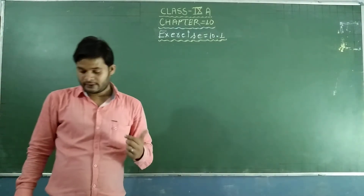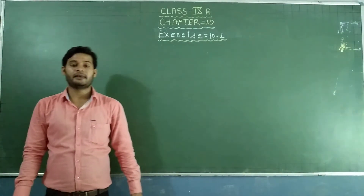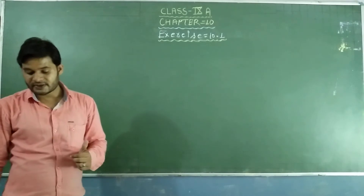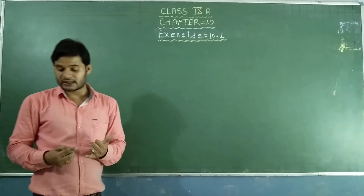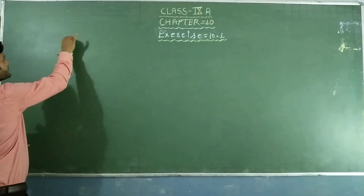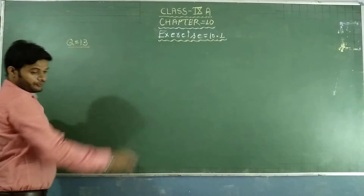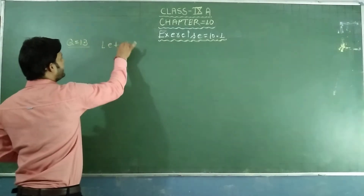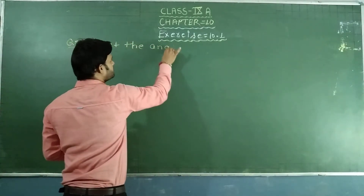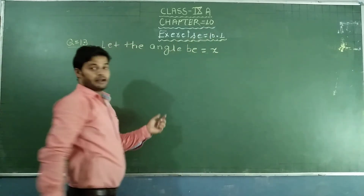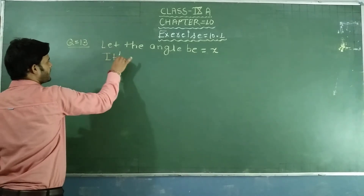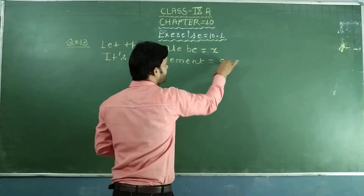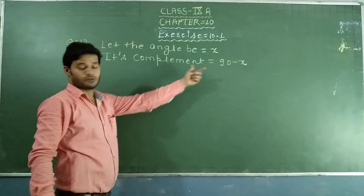Now, question number 13: if the complement of an angle is equal to the supplement of thrice of it, find the measure of the angle. First of all, we will let the angle be x. Its complement equals 90 minus x.